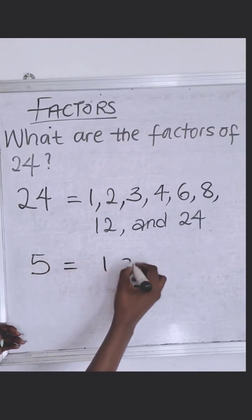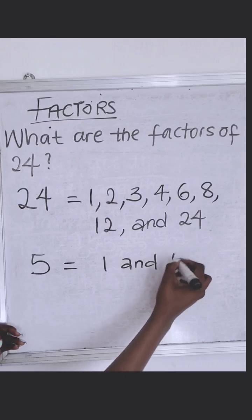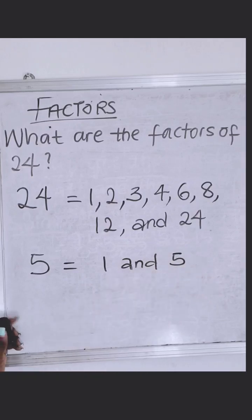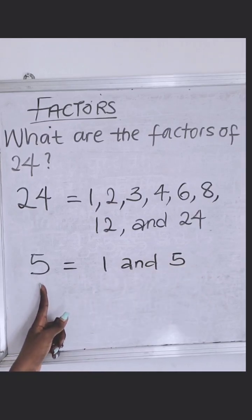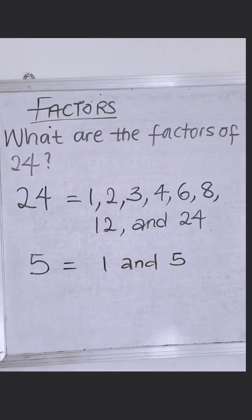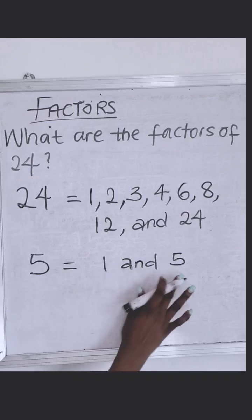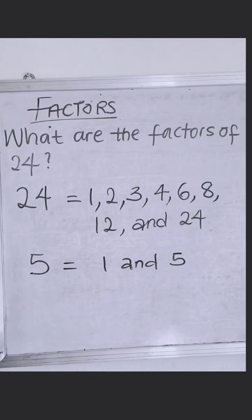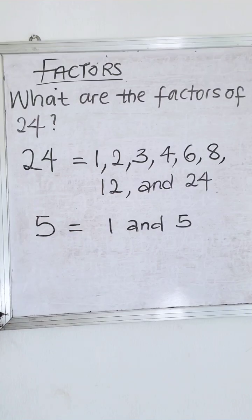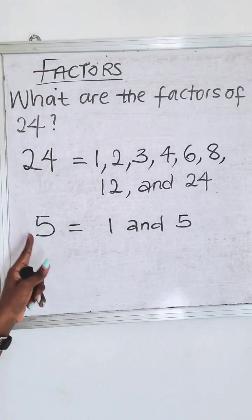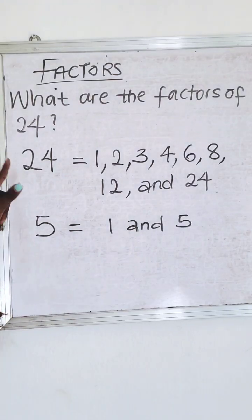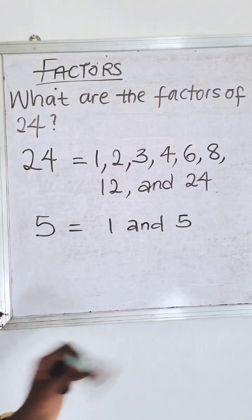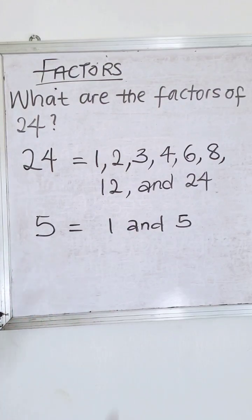When a value like 5 has only one and itself as factors, this value is known as a prime number, because only one and itself can go into it without any remainder. When you have two or more factors like this, these are called composite numbers. So this is a prime number, and this is a composite number.